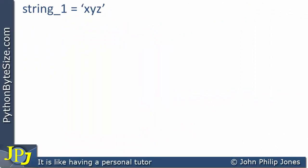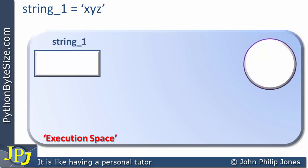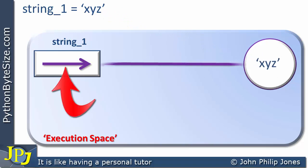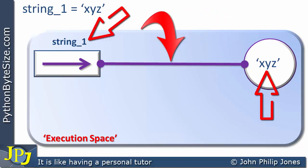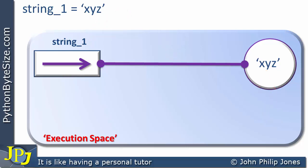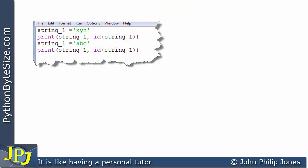Let's now consider the program statement where string_one is assigned the string 'xyz'. We'll see the execution space being created with a rectangular shape and a circular shape representing the reference and the object. The arrow appears in the rectangular shape and the x, y, z appear within the object, indicating these two are bound — in other words, the name string_one is bound to the string object that contains 'xyz'.